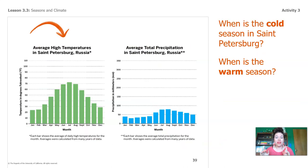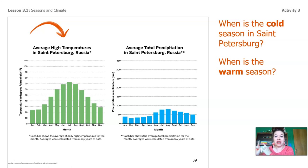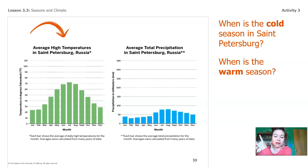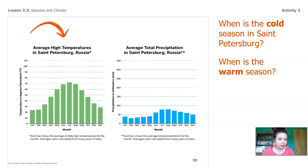Let's think about these two graphs. Remember that the green graph is talking about high temperatures and the blue graph is talking about total precipitation, meaning rainfall. And we're not talking about Anchorage anymore — look at the title of the graph. Now we're talking about St. Petersburg. So when is the cold season in St. Petersburg? Let's take a look at the green graph. When does it look like it's cold in St. Petersburg? Name a couple of months for me.